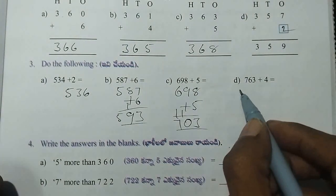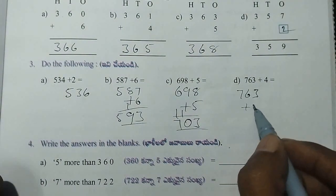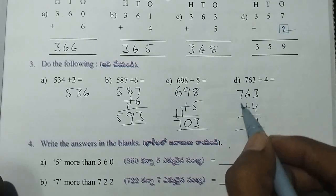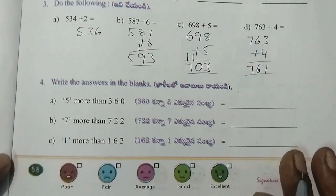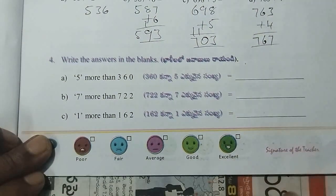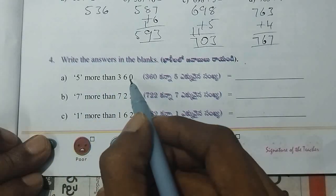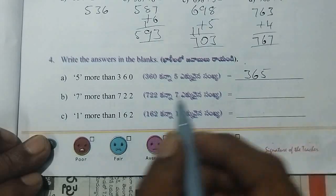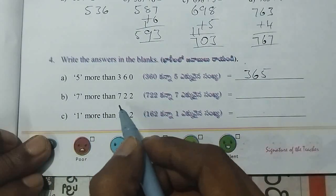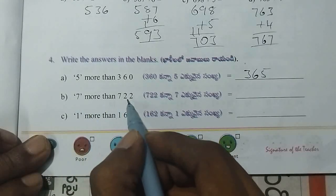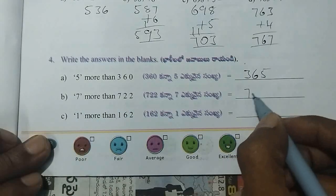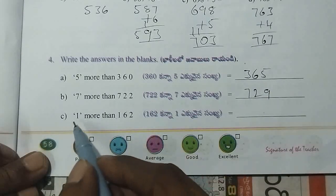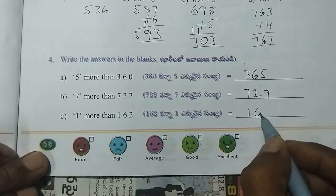7 is 63 plus 4. 4 plus 3, 7. 6, 7. 5 more than 360. That means, 360 is 5. That means, 365 is 5. 7 more than 722. 722 is 7. 729. Next, 1 more than 162. That means, 1 more than 163. 3 over 2.